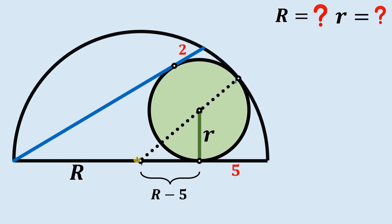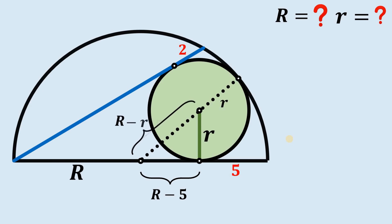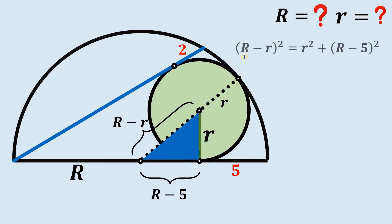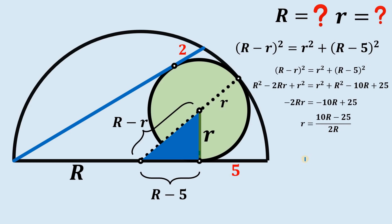This is not hard to prove. We know this is capital R, and this length from the center to this point is small r. Therefore, from the center of the semicircle to the center of the small circle, this is just capital R minus small r. Now let's use this right triangle, because we know it is perpendicular to the tangent segment. Using the Pythagorean theorem, we get capital R minus small r squared equals small r squared plus capital R minus 5 squared. Simplifying, we arrive at the equation: small r equals 10 times capital R minus 25, all over 2 times capital R.